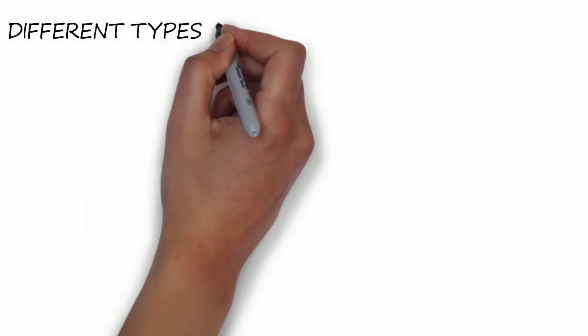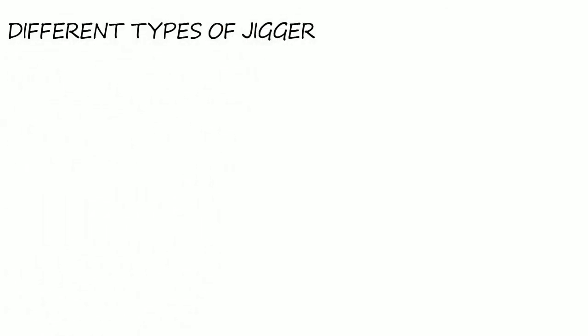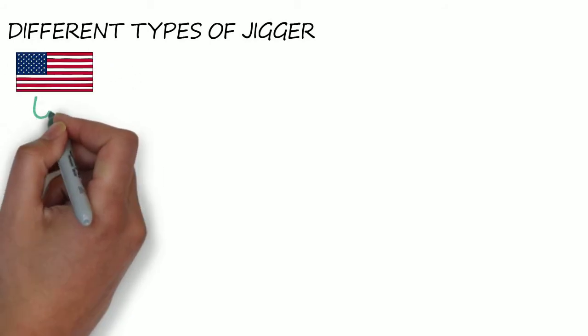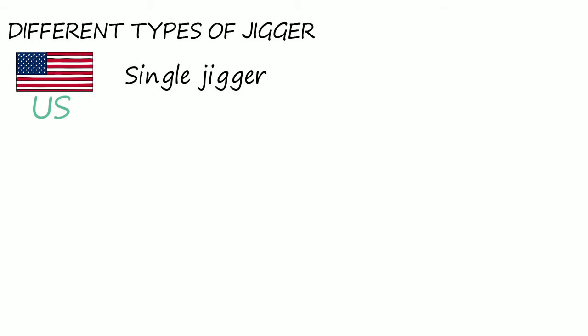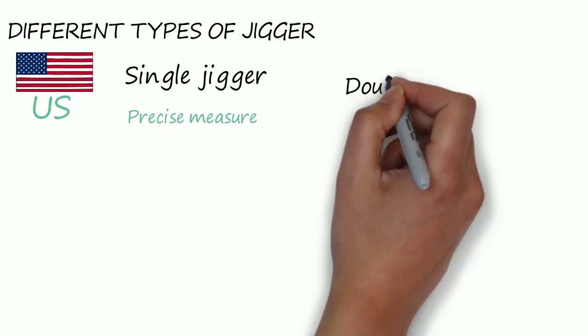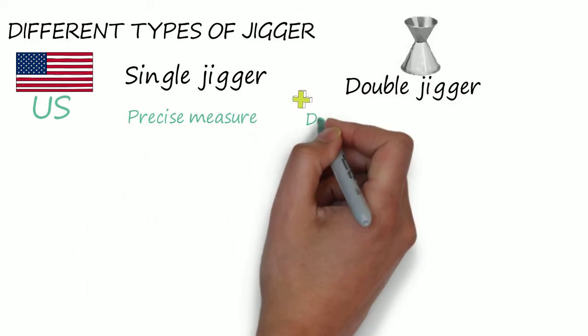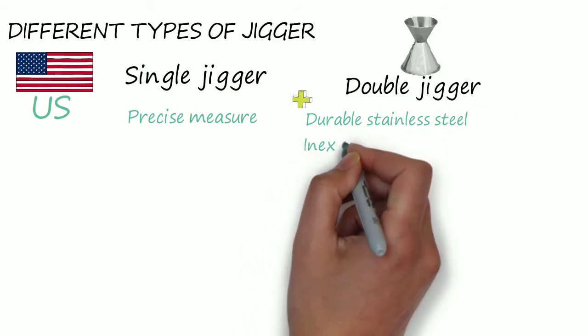Different types of jigger: Let's start with the ones that have specific features and differ in each country. In the US market it's pretty straightforward. You can either get a single jigger, which is a simple single bowl that allows you to precisely measure your liquor, or a classic American double jigger, which is made from durable stainless steel and is fairly inexpensive.